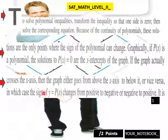If the graph actually crosses the x-axis, then the graph either goes from above the x-axis to below it or vice versa. In which case, the sign of y = P(x) changes from positive to negative or negative to positive.